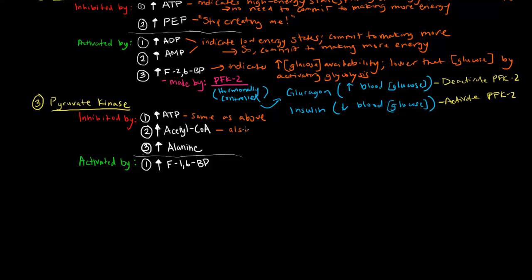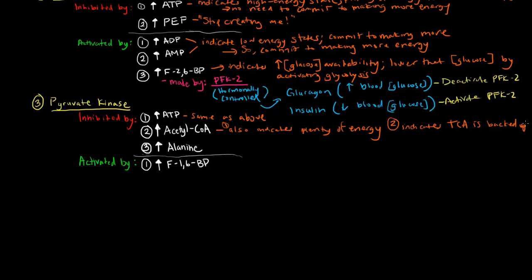High levels of acetyl-CoA also inhibit pyruvate kinase. If there's a lot of acetyl-CoA, this is also an indicator of having plenty of energy. In addition, if there's a lot of acetyl-CoA, that probably means the TCA cycle — which uses up acetyl-CoA and breaks it down to create NADHs for the electron transport chain — is backed up. So there's no sense in creating more pyruvate, which might be turned into acetyl-CoA, if there's already plenty of acetyl-CoA around.